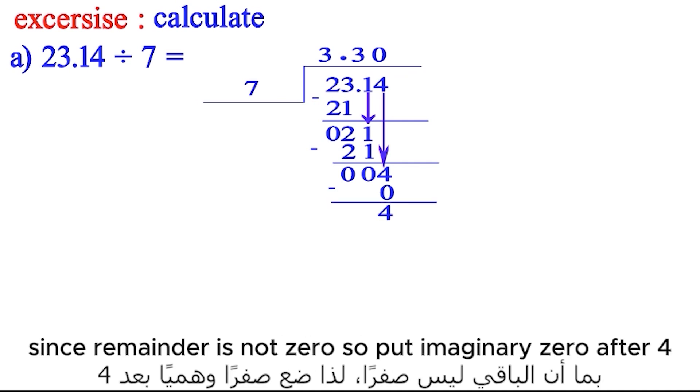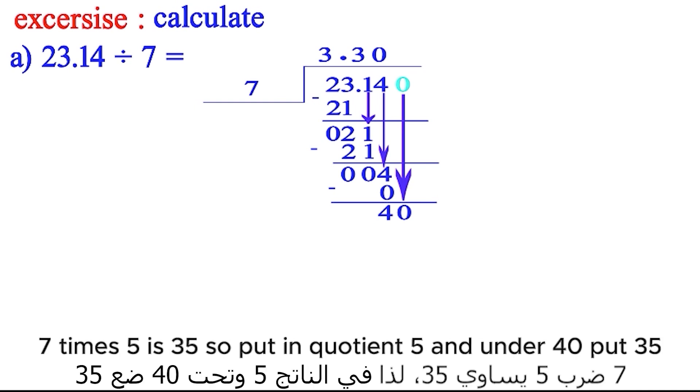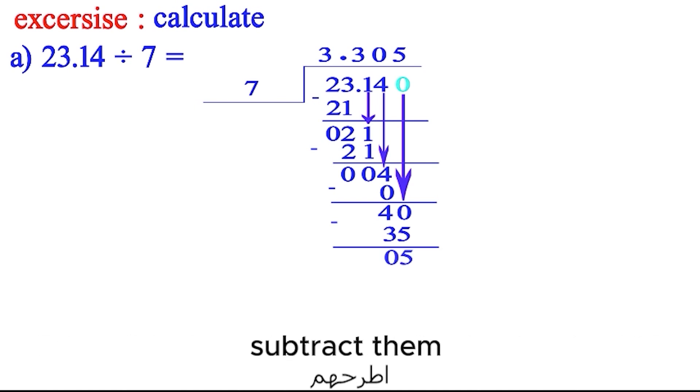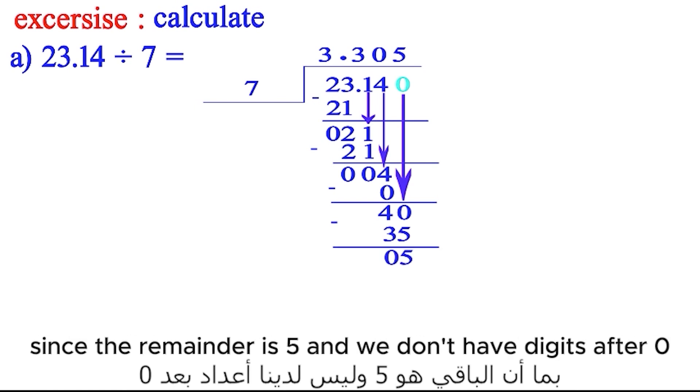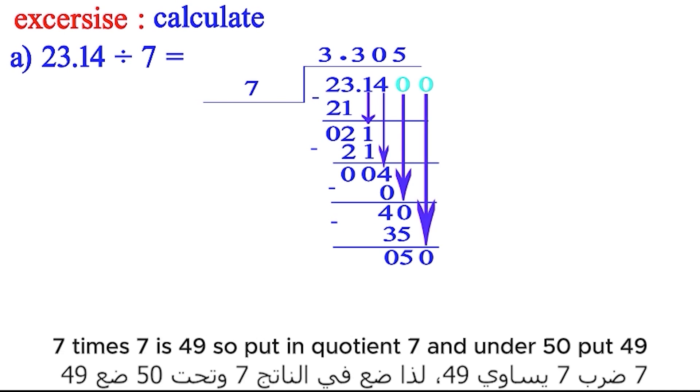Since the remainder is not 0, so put imaginary 0 after 4. Bring down 0. 40 is greater than 7, so solve normally. 7 times 5 is 35, so put in the quotient 5 and under 40 put 35. Subtract them. Since the remainder is 5 and we don't have digits after 0, put another imaginary 0 after 0. Bring down 0. 7 times 7 is 49, so put in the quotient 7 and under 50 put 49. Subtract them.